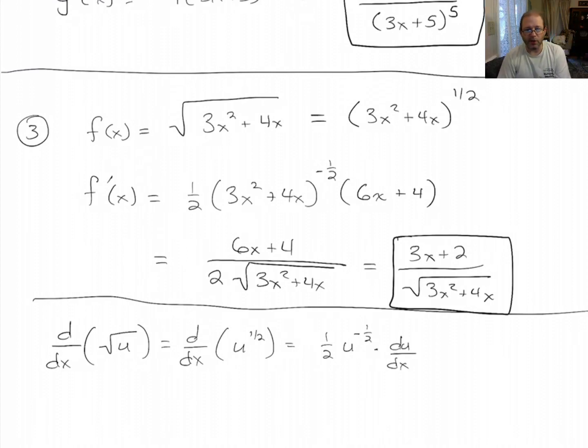Or actually, I don't want to use the Leibniz notation. Times u prime. Alright, so if you put this together, the 2 goes downstairs, square root of u goes downstairs, and then u prime on top.